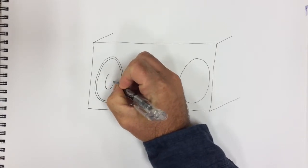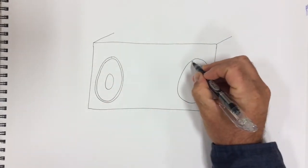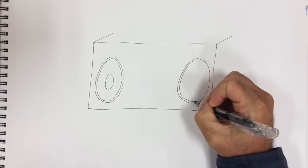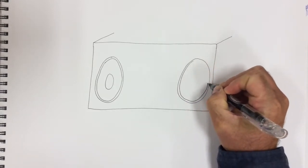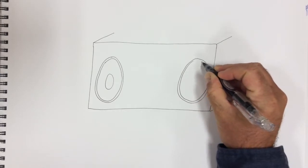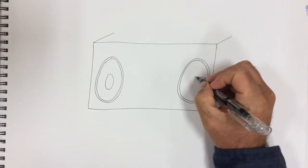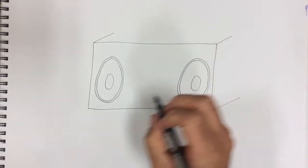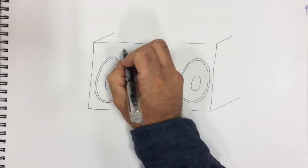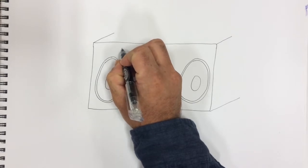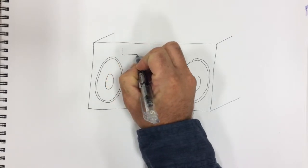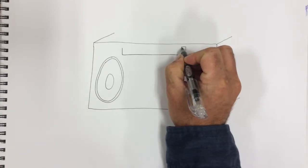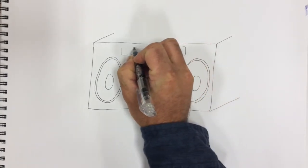And inside of that let's do one more small ellipse. Now we'll do a long skinny french fry style rectangle. And this is gonna be the dial for finding a radio station on the boombox.